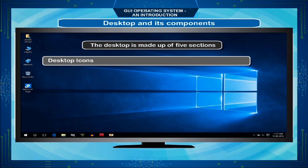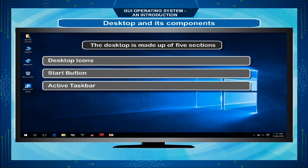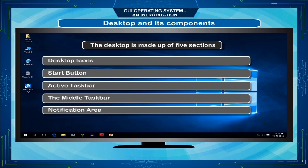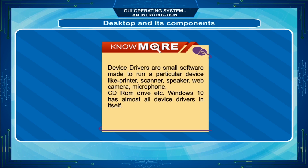The five sections of the desktop are: Desktop icons, Start button, Active Taskbar, the Middle Taskbar, and the Notification Area.